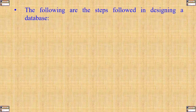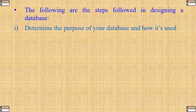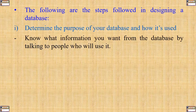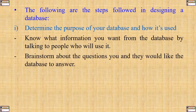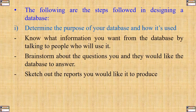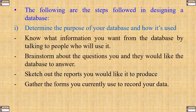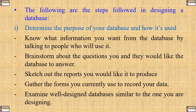The following are the steps that you can follow in designing a database. Number one: determine the purpose of your database and how it is used. Know what information you want from the database by talking to people who will use it. Brainstorm about the questions you would like the database to answer, sketch out the reports you would like it to produce, gather the forms you currently use to record your data, and examine well-designed databases similar to the one you are about to design.